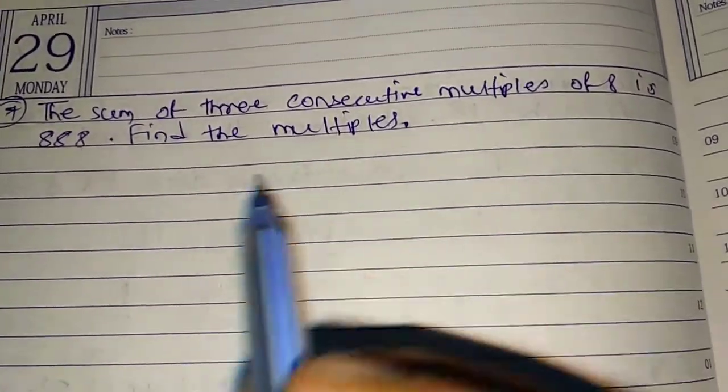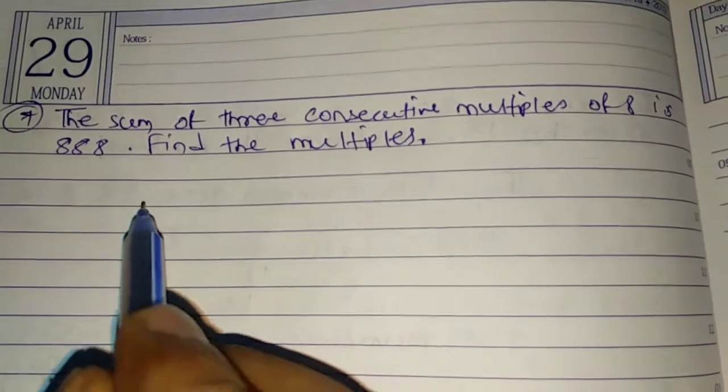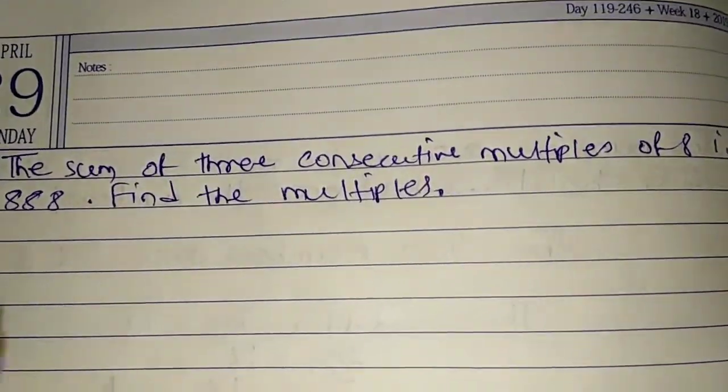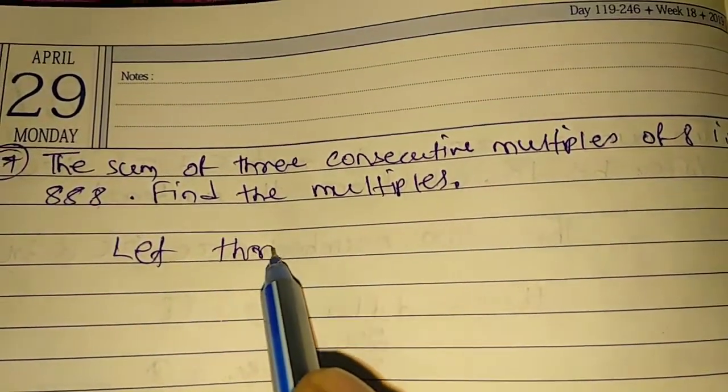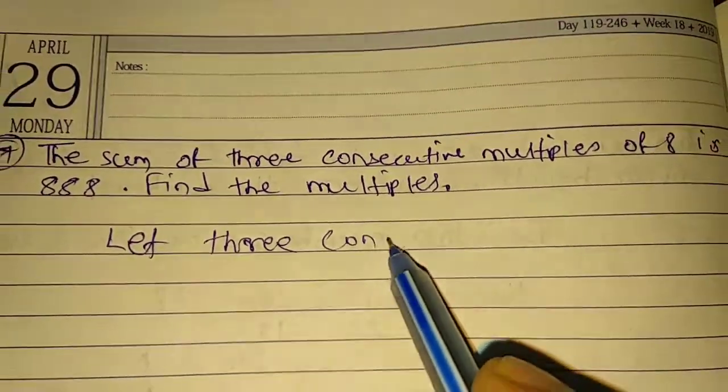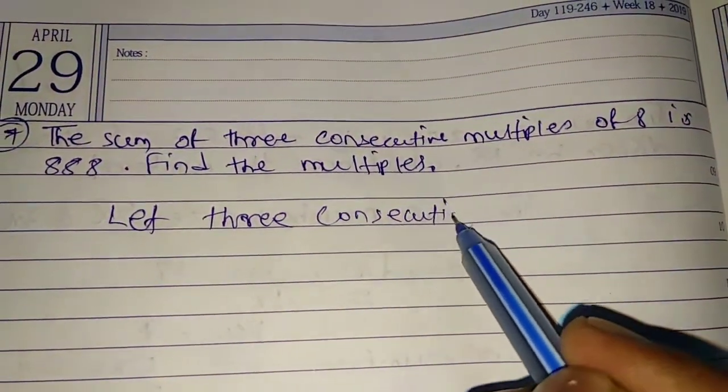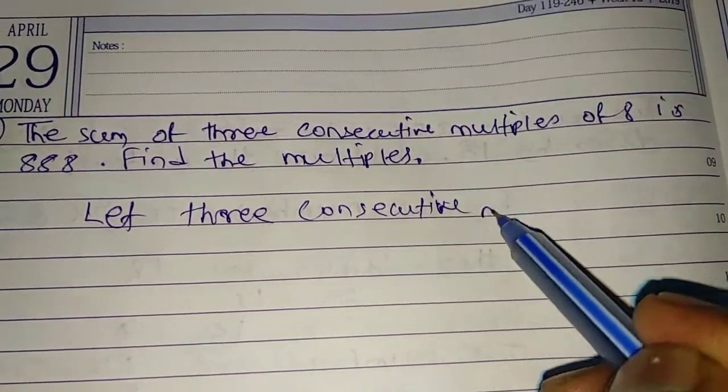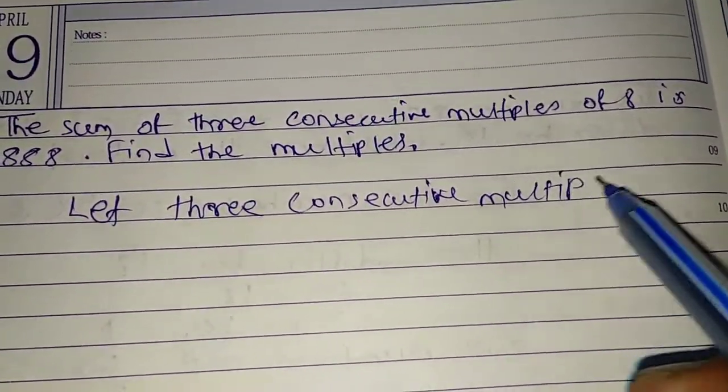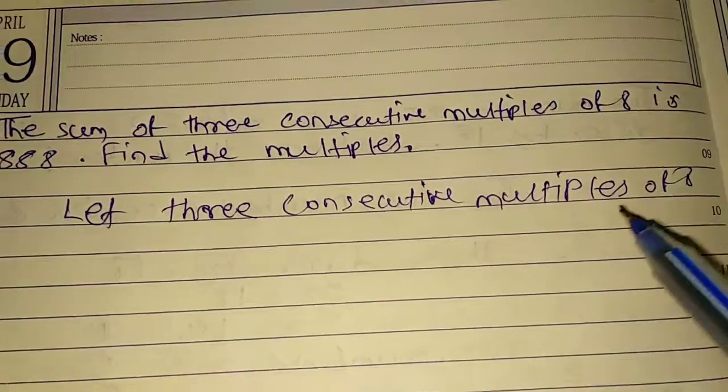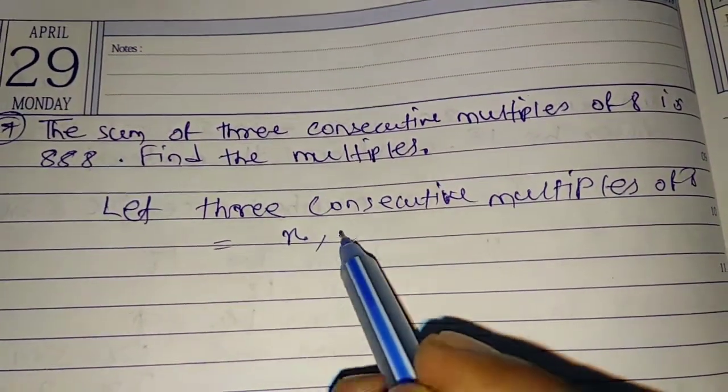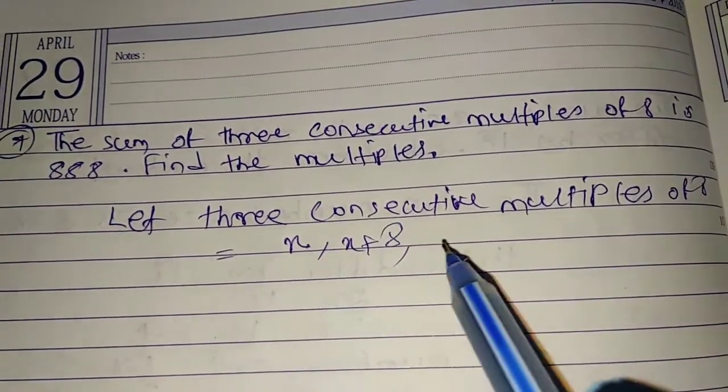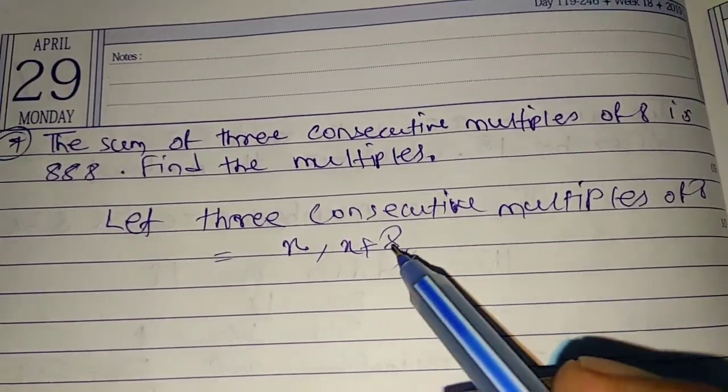So let three consecutive multiples of 8 equal to: first is X, then second is X plus 8, third is X plus 8 plus 8, that is X plus 16.